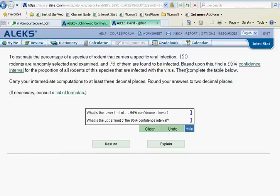Now based on this, find a 95% confidence interval for the proportion of all rodents of the species that are infected with the virus. Then complete the table below. As always, let's take a minute or two and look at our notes.